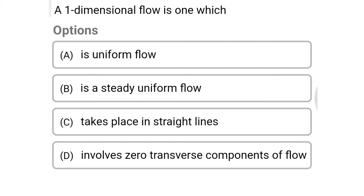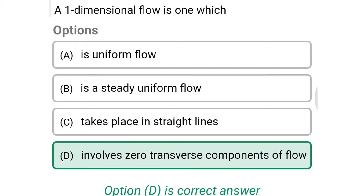Next question: a one-dimensional flow is one which — Option A: is uniform flow. Option B: is a steady uniform flow. Option C: takes place in straight lines. Option D: involves zero transverse components of the flow. The correct answer is Option D, involves zero transverse components of the flow.